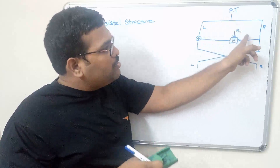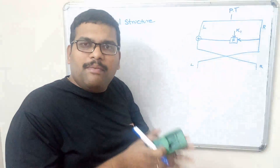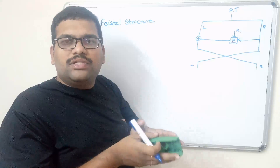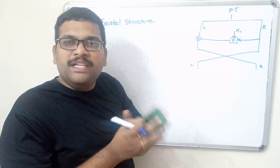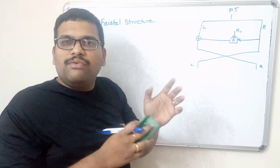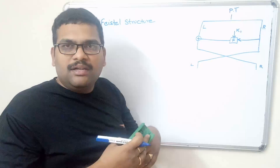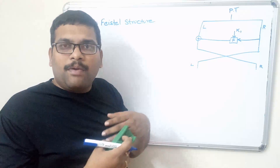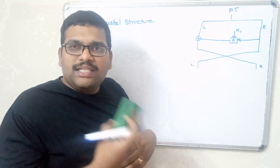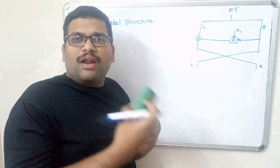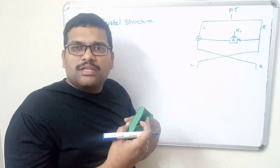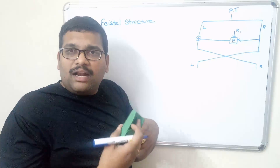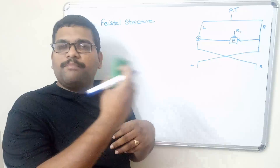We will have a master key, and in each and every round we will use a separate sub-key. That means from the master key we have to generate different sub-keys. For example, if our algorithm has 10 rounds — that is, processing is done in 10 rounds — we need to generate 10 sub-keys from the master key.